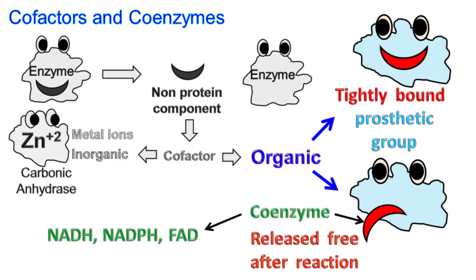Most coenzymes cannot be synthesized by the body and are derived from vitamins. Examples of coenzymes include NADH, NADP, FAD, etc.